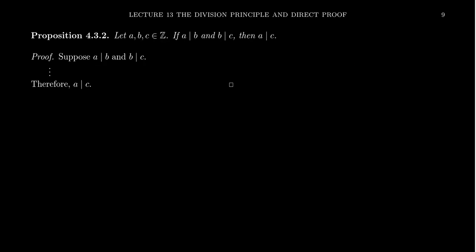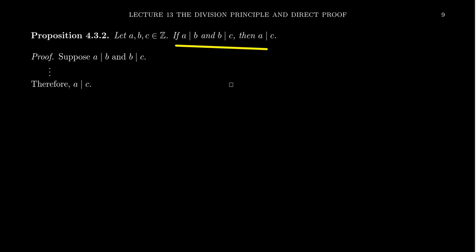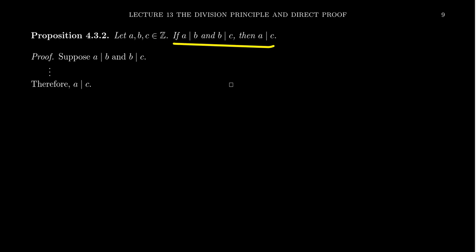Let's look at another example, this time with integer divisibility. Let A, B, C be integers. If A divides B and B divides C, then we want to conclude that A divides C. We're going to prove this by direct proof. The first sentence describing A, B, C as integers is just adding context — it describes the universe in play. The conditional we're actually proving is: if A divides B and B divides C, then A divides C.